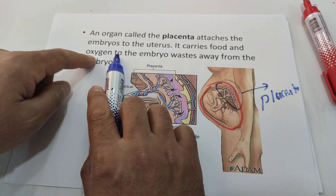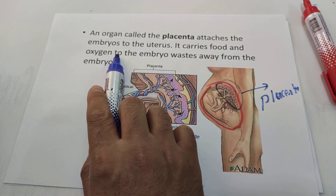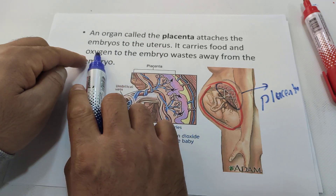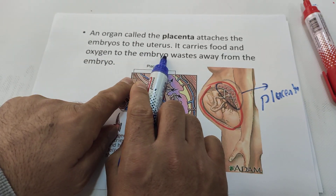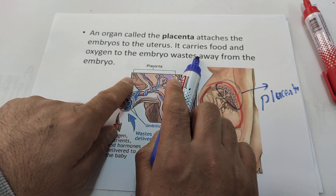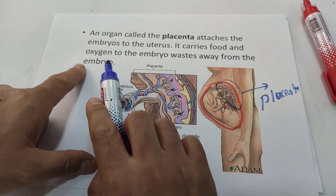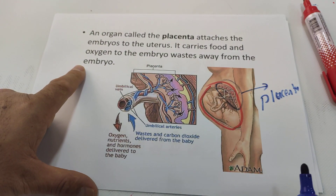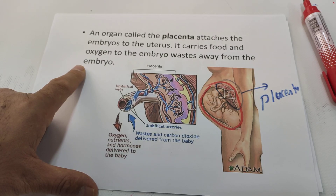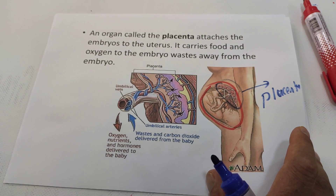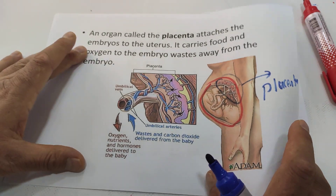The placenta carries food and oxygen from the mother to the baby, and carries oxygen to the embryo. Waste products — like carbon dioxide and other waste — are transferred from the baby back to the mother.